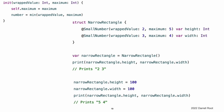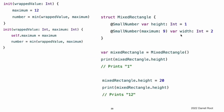By including arguments to the property wrapper, you can set up the initial state in the wrapper or pass other options to the wrapper when it is created. This syntax is the most general way to use a property wrapper. You can provide whatever arguments you need to the attribute and they are passed to the initializer. When you include property wrapper arguments, you can also specify an initial value using assignment. Swift treats the assignment like a wrappedValue argument and uses the initializer that accepts the arguments you include. The instance of SmallNumber that wraps height is created by calling SmallNumber(wrappedValue: 1), using the default maximum value of 12. The instance that wraps width is created by calling SmallNumber(wrappedValue: 2, maximum: 9).